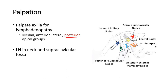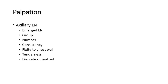Continue with the supraclavicular glands while standing behind the patient, and also the neck glands. If there is a palpable axillary lymph node, we have to further describe it: mention which group it is (anterior, medial, lateral, apical, or posterior), the number of palpable lymph nodes, consistency whether it's rubbery or hard, fixity to the chest wall whether it's mobile or immobile — which helps in clinical staging — and also any tenderness noted and whether the lymph nodes are discrete or matted.